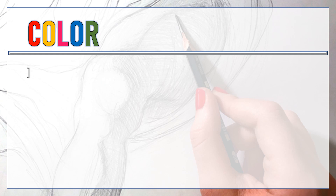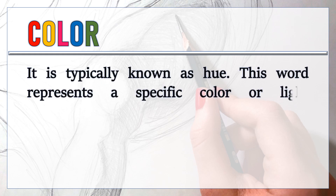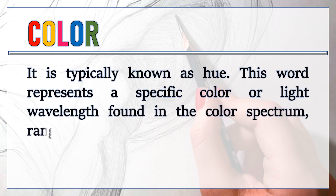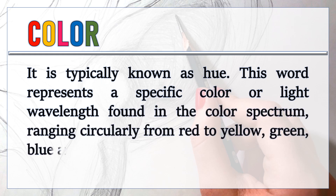First is color, typically known as hue. This word represents a specific color or light wavelength found in the color spectrum — yellow, green, blue, and back to red.